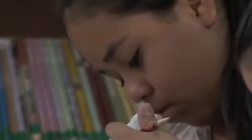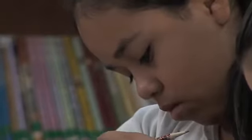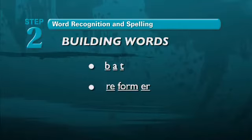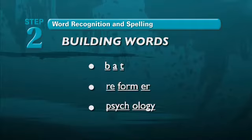As students move into step two, they have the building blocks for words — letters, syllables, and meaning parts. With these building blocks, they can build words like bat from letters, reformer from Latin meaning parts, or psychology from Greek combining forms. Each of these words is based on the same skill: building words. It is the type of building block and complexity of the content that changes.